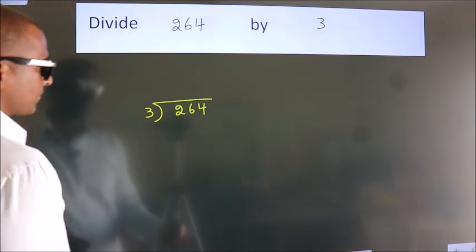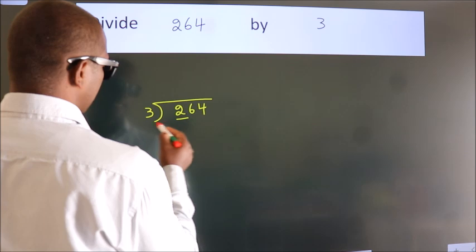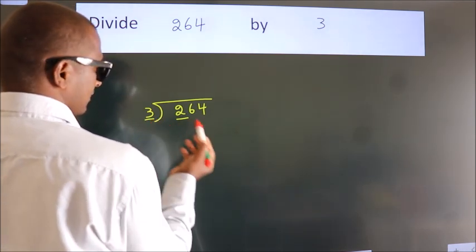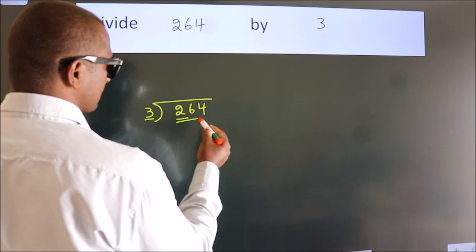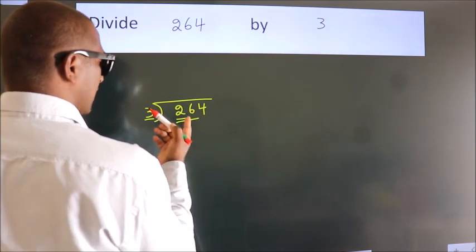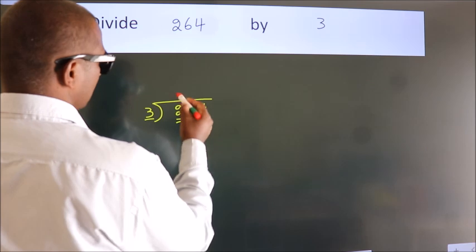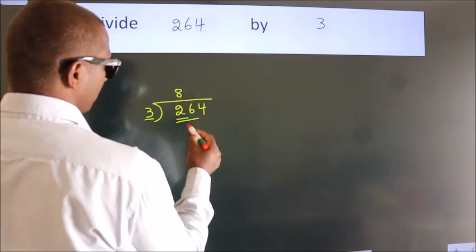Next, here we have 2, here 3. 2 is smaller than 3, so we should take 2 numbers: 26. A number close to 26 in the 3 table is 3×8=24.